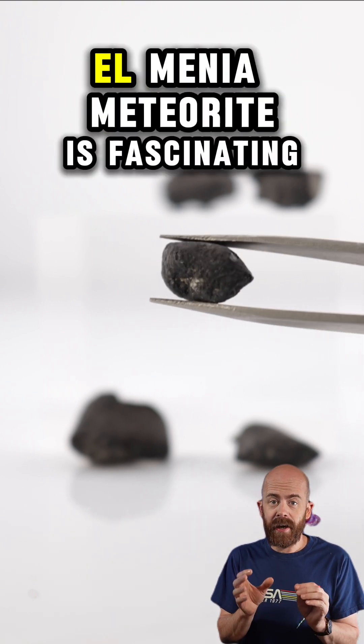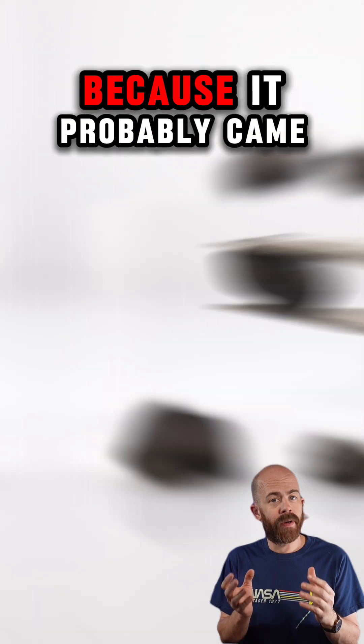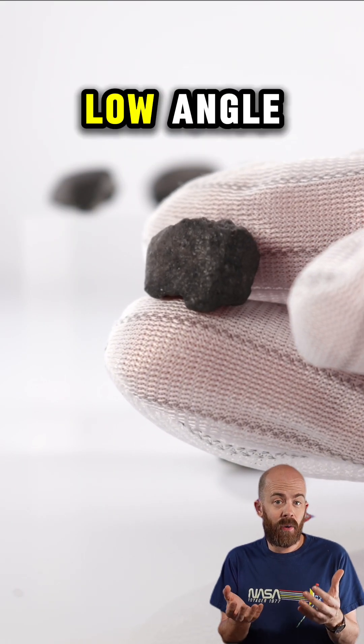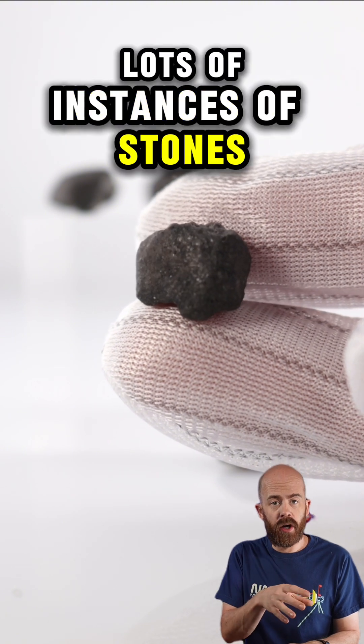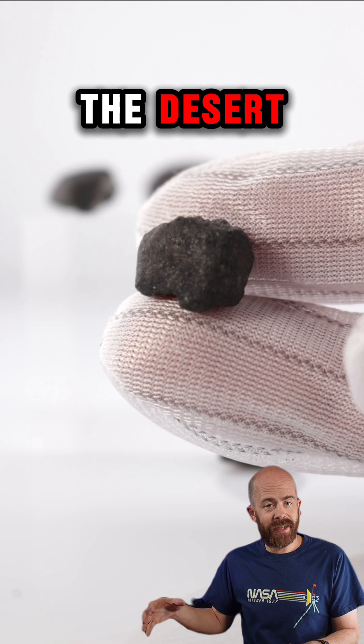Now, that said, the Elmenia meteorite is fascinating because it probably came in at a very low angle. And the reason we can tell that is because there are lots of instances of stones skipping across the surface of the desert.